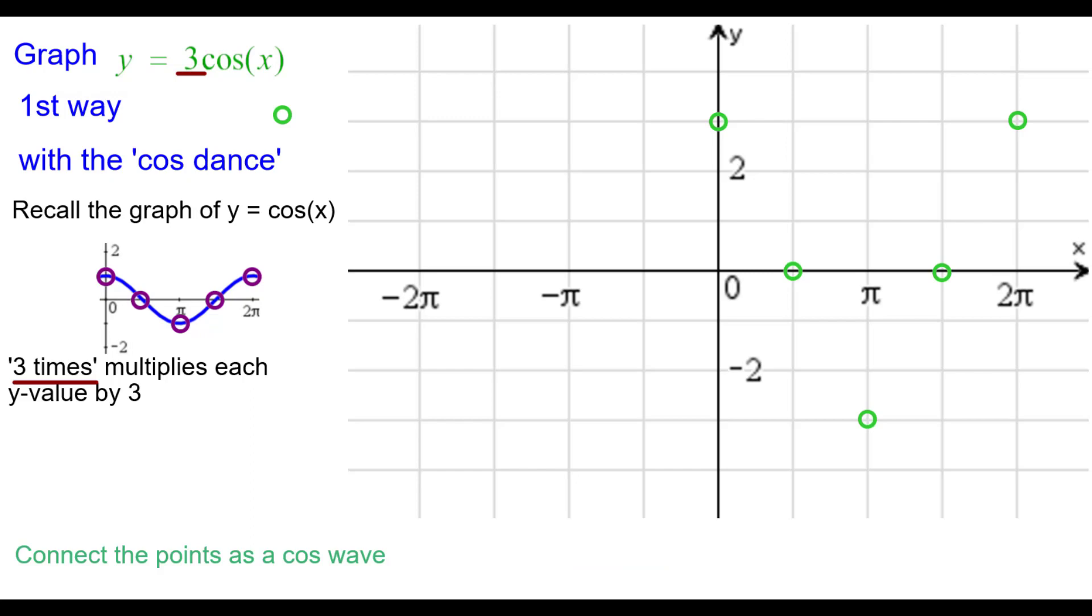Connect the points as a cosine wave. So the first two points will do half of a frown concave down. Next ones are a smile concave up and then half of a frown concave down.